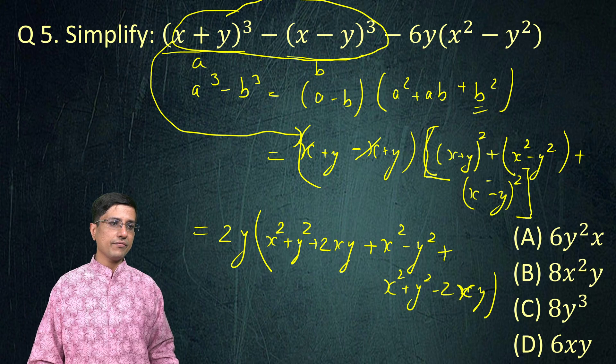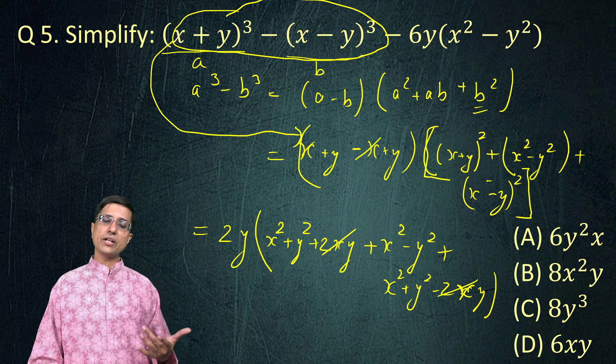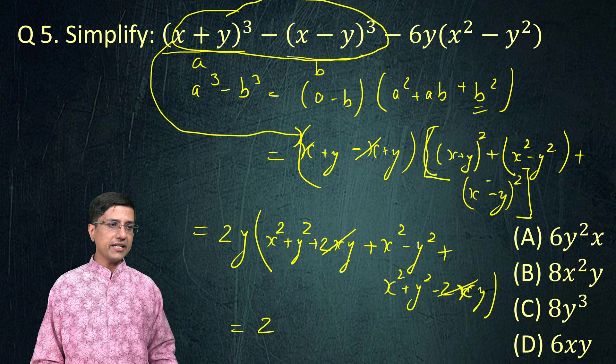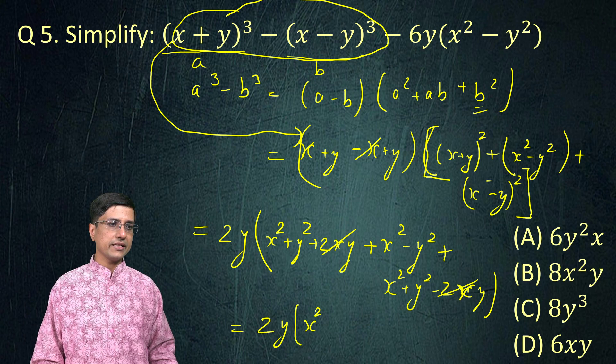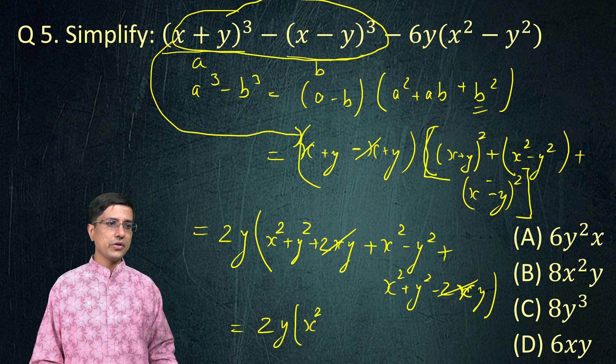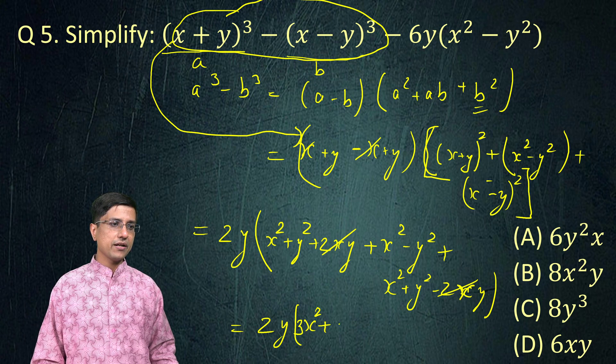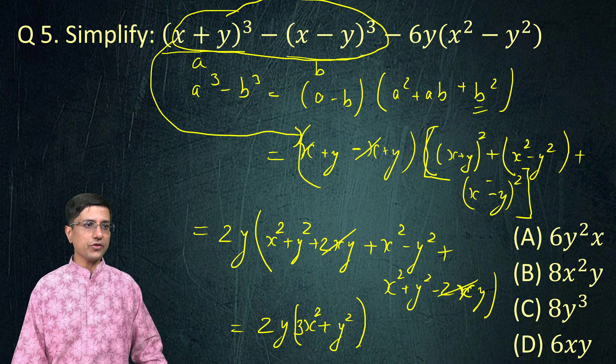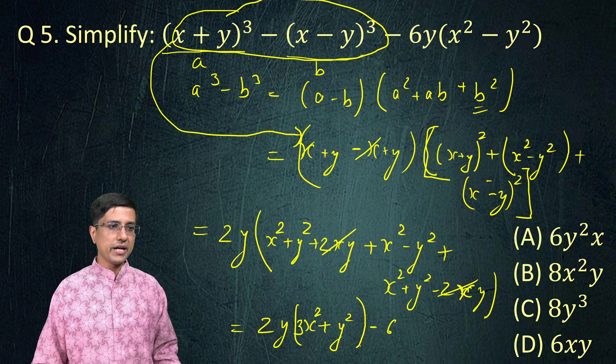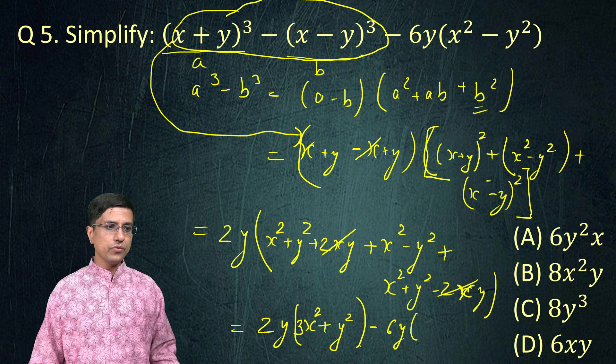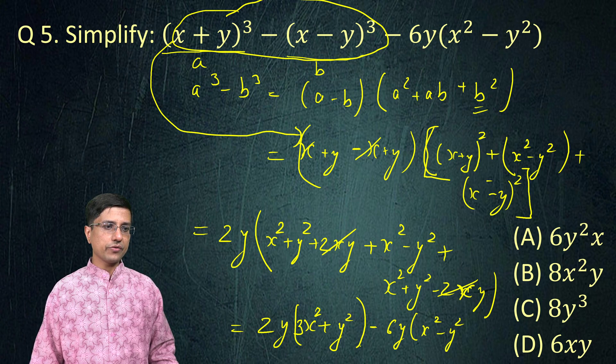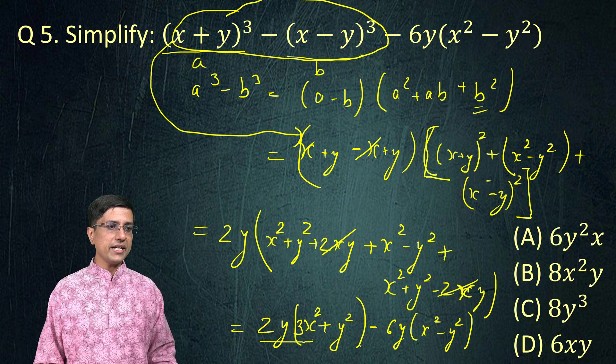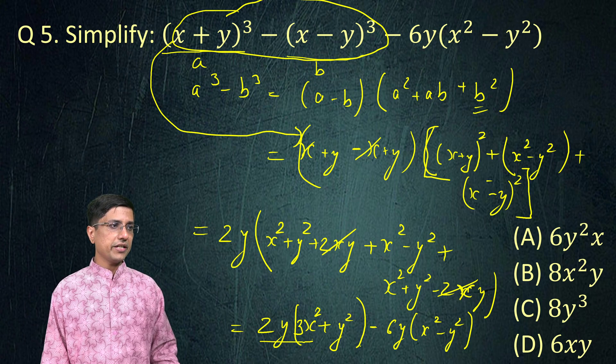And of course, this -2xy + 2xy would again cancel. So, if you simplify it further, what you would get is 2y into x². There are how many x's? One, two and three. So, there will be 3x² + y². And then rest of those also we will write - 6y into (x² - y²). Now, you can open the bracket. I can now simplify it further. I will write it right here at the top.